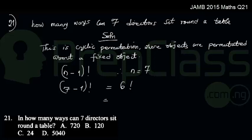6 factorial means the number 6 counting down to 1, so this would be 6×5×4×3×2×1. Multiplying that gives 720, and looking at the options, that corresponds to option A. So in total, there are 720 ways.